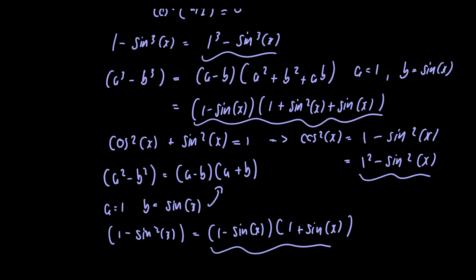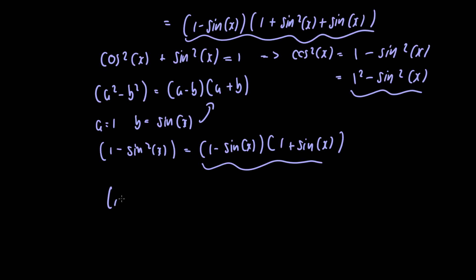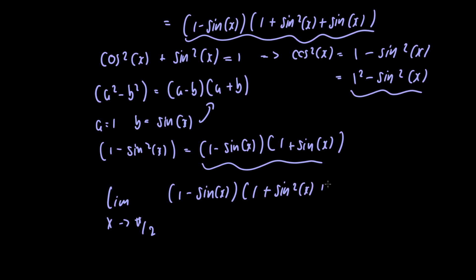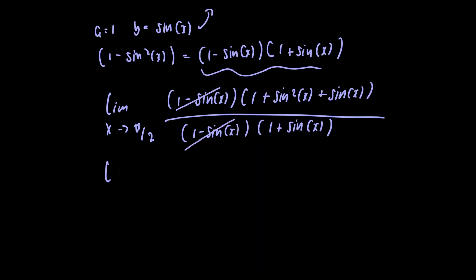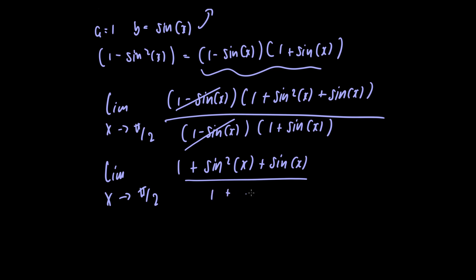We plug the factored numerator and denominator into the limit. So we have the limit as x approaches pi over 2 of 1 minus sine of x multiplied by 1 plus sine squared of x plus sine of x, all divided by 1 minus sine of x multiplied by 1 plus sine of x. Notice that the 1 minus sine of x factors cancel, leaving us with the limit as x approaches pi over 2 of 1 plus sine squared of x plus sine of x, divided by 1 plus sine of x.